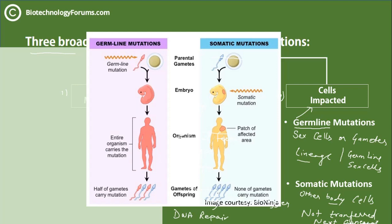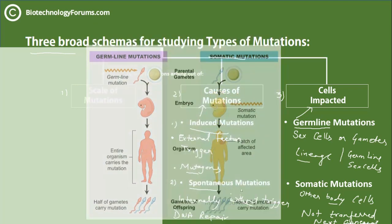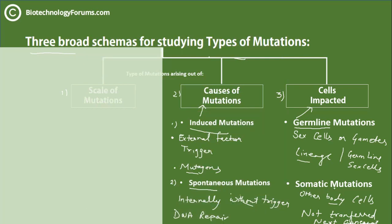That somatic mutation is not transmitted to the next generation. Somatic mutations are also called acquired mutations because we do not inherit them — we acquire them during our lifespan. So based on the cells impacted, we get two more types: germline and somatic mutations. In total, we now have four types: first induced, second spontaneous, third germline, and fourth somatic. With this, we have covered two broad classification schemas — causes and cells impacted.